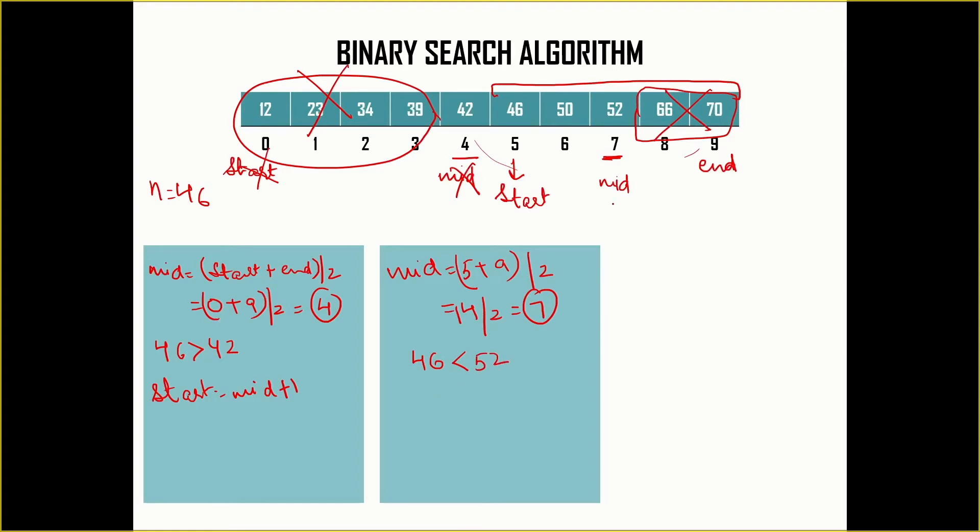So we are going to move the end of the list because we are now searching in this part of the list. This is going to be the new end, one position before middle. So we change the value of end to mid minus 1.